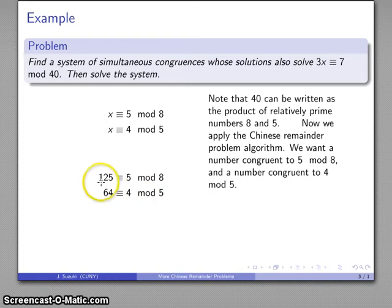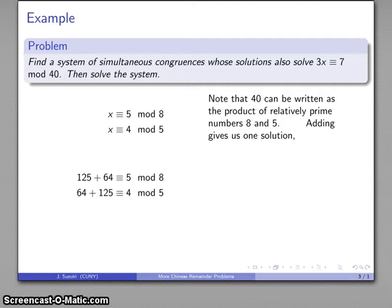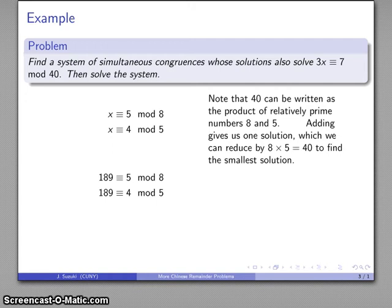Because 125 ≡ 0 mod 5 and 64 ≡ 0 mod 8, if I add these two numbers I won't change either congruence. So 125 + 64 = 189 satisfies both congruences. I can reduce this by 5 times 8 to get the smallest solution. And there's my solution to the original system, 3x ≡ 7 mod 40.